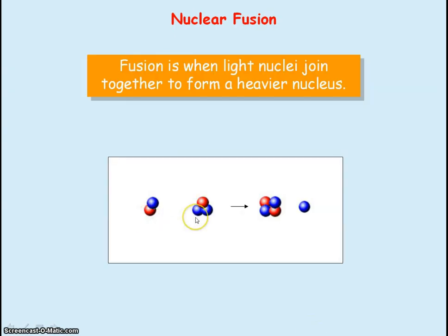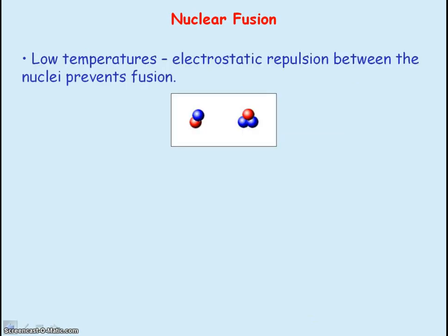Fusion occurs when two light nuclei join together to form a heavier nucleus. If the temperature is too low then the light nuclei do not have enough kinetic energy to overcome the electrostatic repulsion between the nuclei so fusion cannot take place.